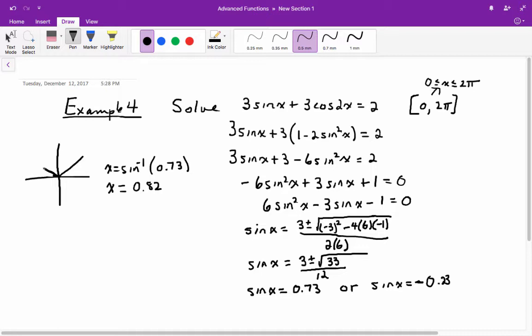So you get another one, which is kind of the mirror image over here. So the other one is going to be π minus that, and π minus 0.82 is going to be equal to 2.32 radians.